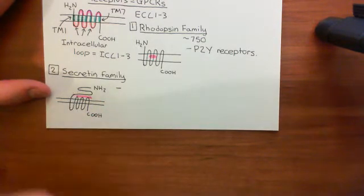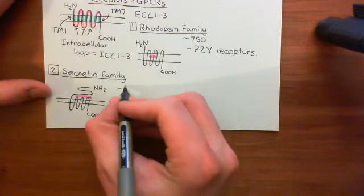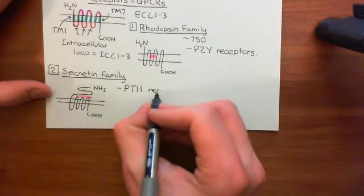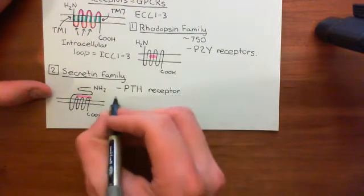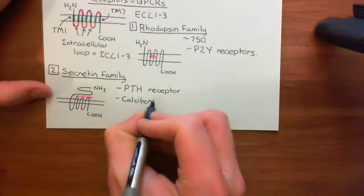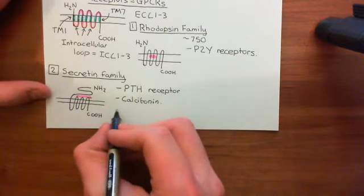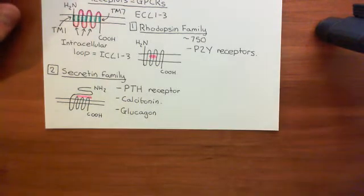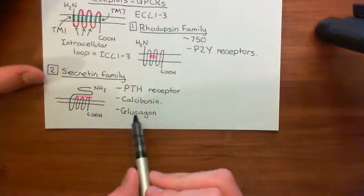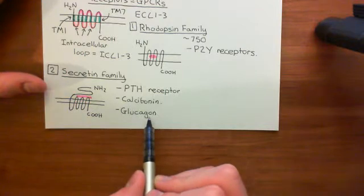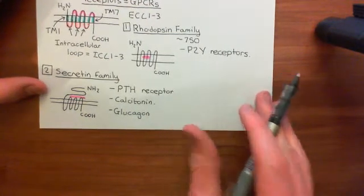Examples of secretin family G-protein coupled receptors include the receptors for parathyroid hormone (PTH), receptors for calcitonin — another hormone involved in calcium regulation — and glucagon receptors. Notably, all of these ligands are peptides: parathyroid hormone is a peptide, calcitonin is a peptide, and glucagon is a peptide.